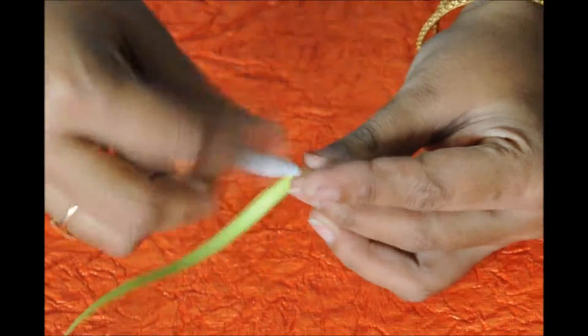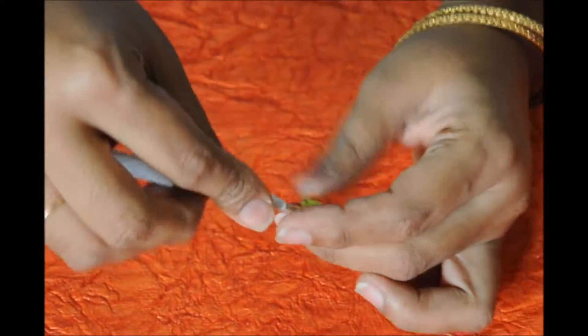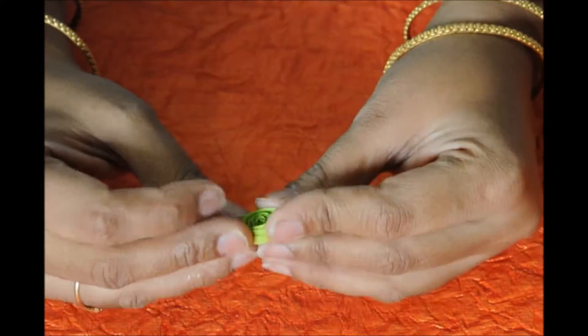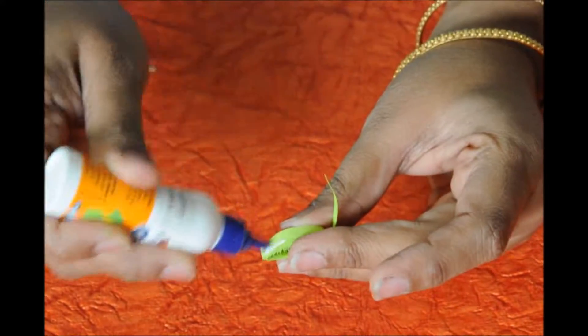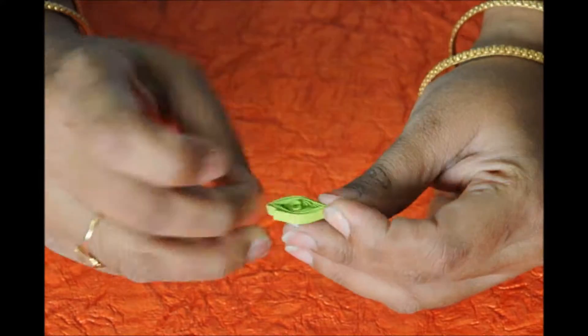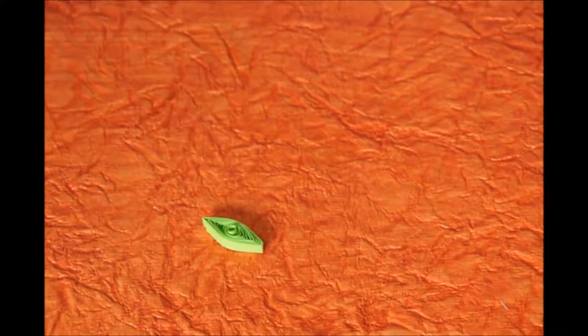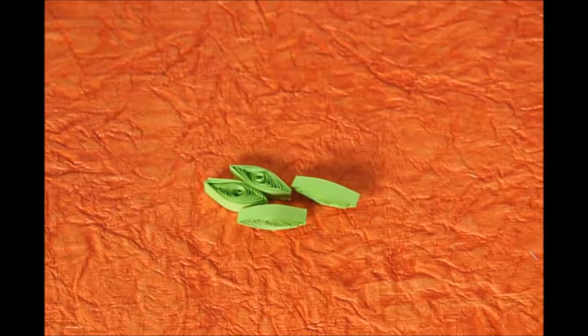Now, insert the quiller into the green color quilling strip and start rolling until the end in circular way. Loosen it and press on both sides to make it into a leaf. Glue it at the end. Make about five to six leaves.